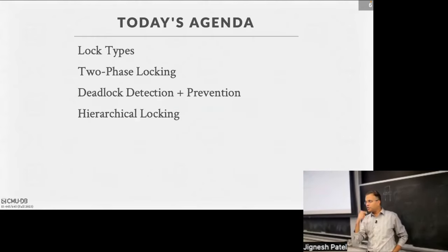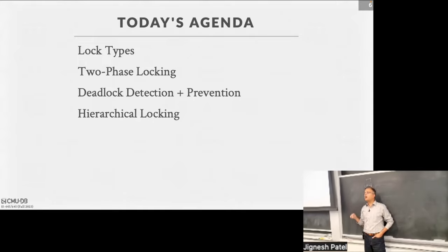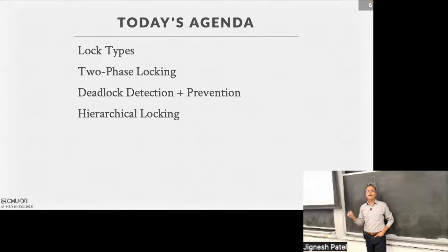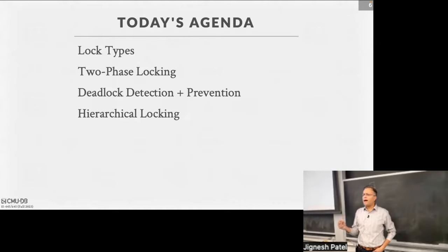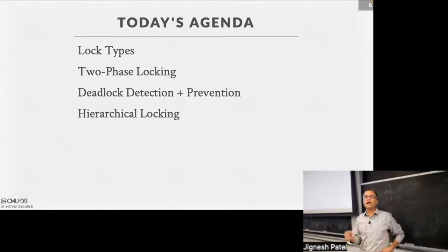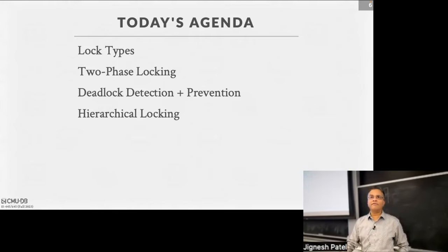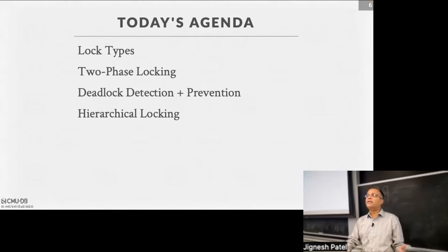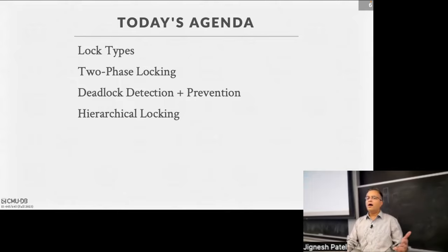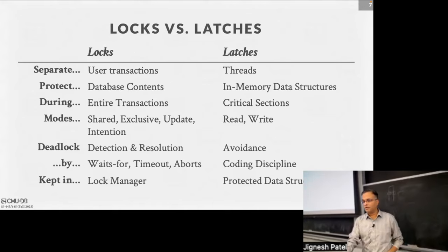Today we'll talk about different lock types, the protocol called two-phase locking, and some bad things that can happen called deadlocks and how we get around that. Then, time permitting, we'll get to hierarchical locking where we lock at different levels in the tree — entire database, a table, a page, a record, or even a column in a record.